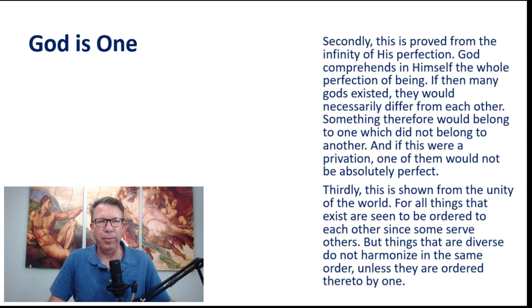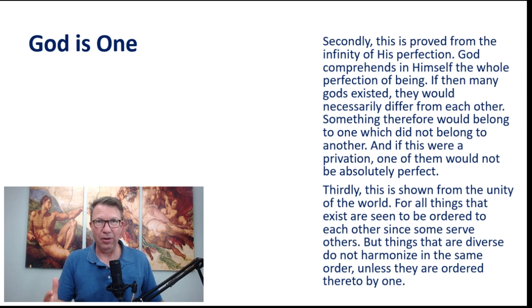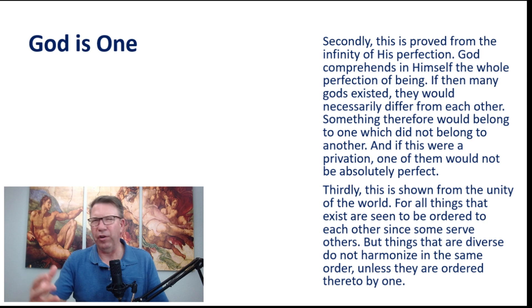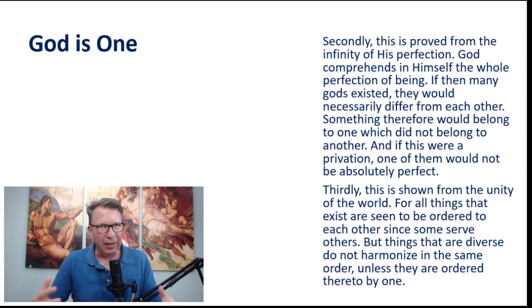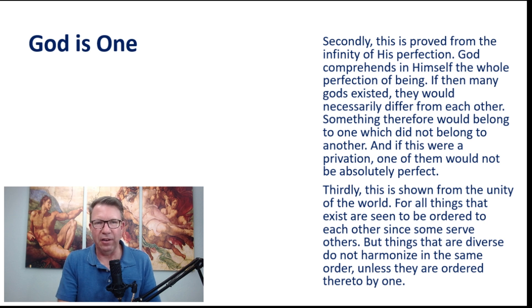Secondly, this is proved from the infinity of his perfection. 'God comprehends in himself the whole perfection of being.' He's going back to the second attribute of God, that he's perfect and that in him pre-exists the perfection of all creatures. We would have to agree that in order for us to experience perfection, there has to be some ultimate perfection by which all perfections are perfect. 'If then many gods existed, they would necessarily differ from each other. Something, therefore, would belong to one which did not belong to another, and if this were a privation, one of them would not be absolutely perfect.'